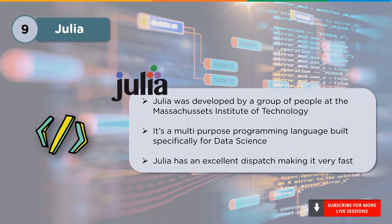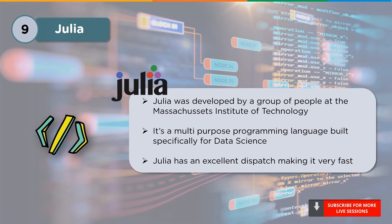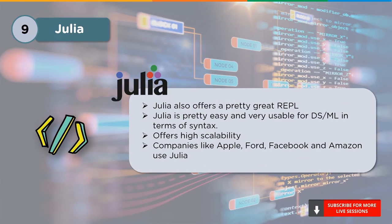At number 9, we have Julia. Julia was recently developed by a group of four people at the Massachusetts Institute of Technology. It's a multi-purpose programming language specifically designed for data science. Julia has excellent dispatch making it extremely fast — it is faster than Python because it is designed to quickly implement math concepts like linear algebra and matrix representations. Julia includes NREPL, a read-eval-print loop or interactive command line similar to Python's. It offers high scalability and companies like Ford, Apple, and Amazon use Julia. Other programming languages have better compelling advantages over it, and Julia is relatively new with a lot of scope for growth.